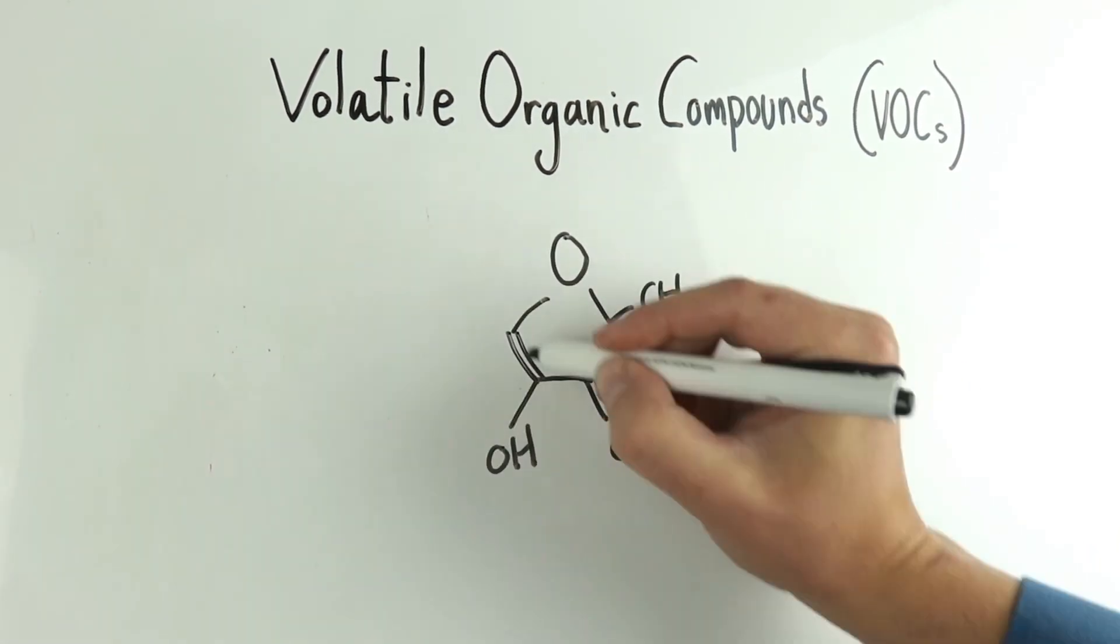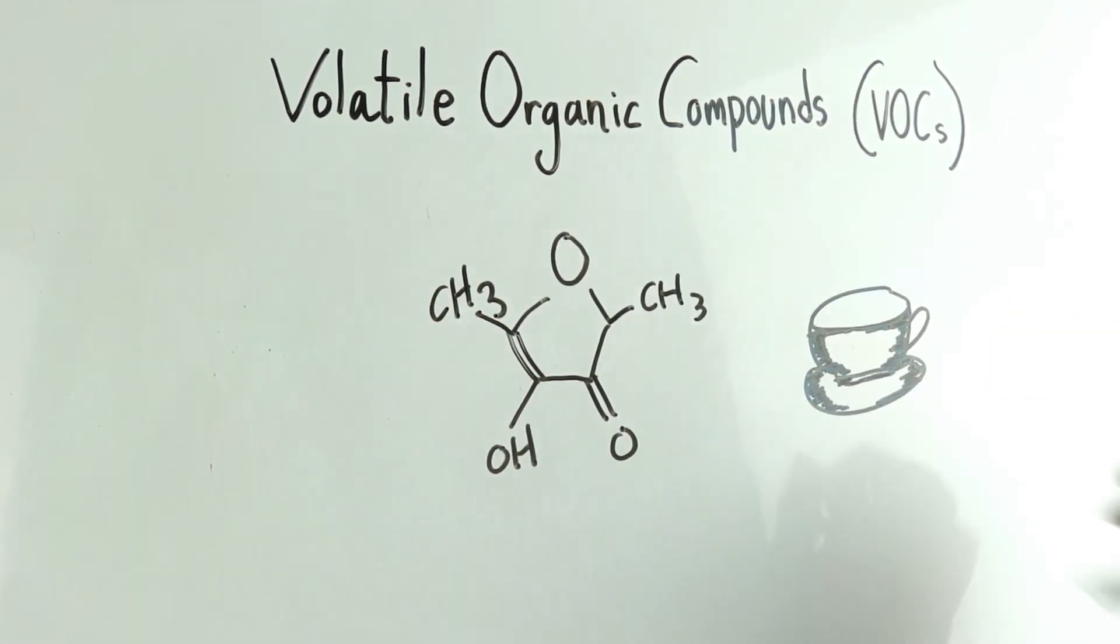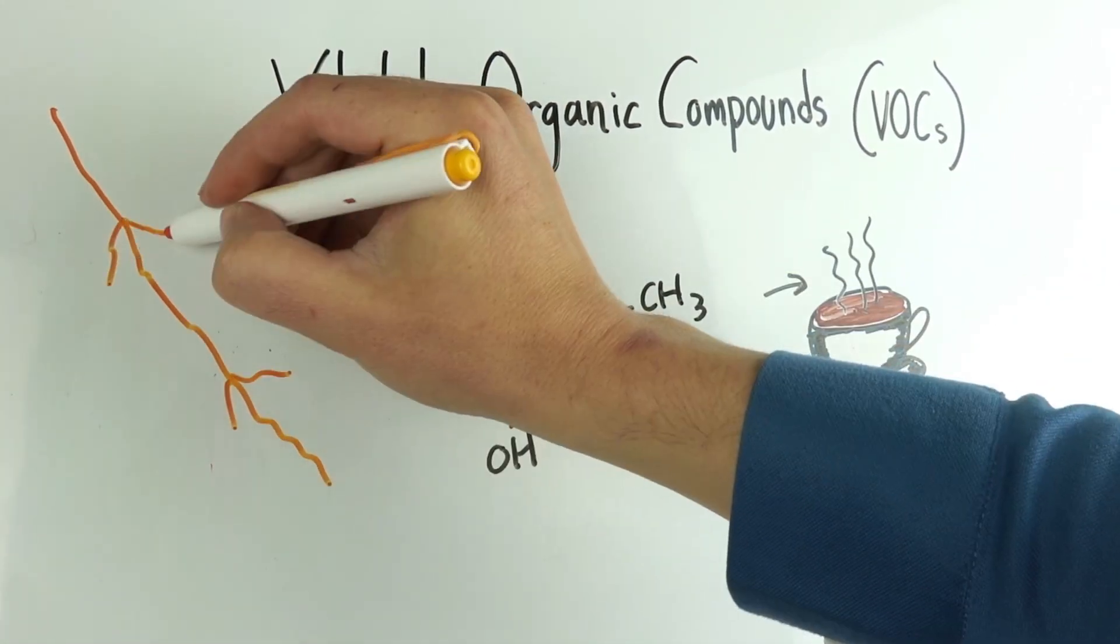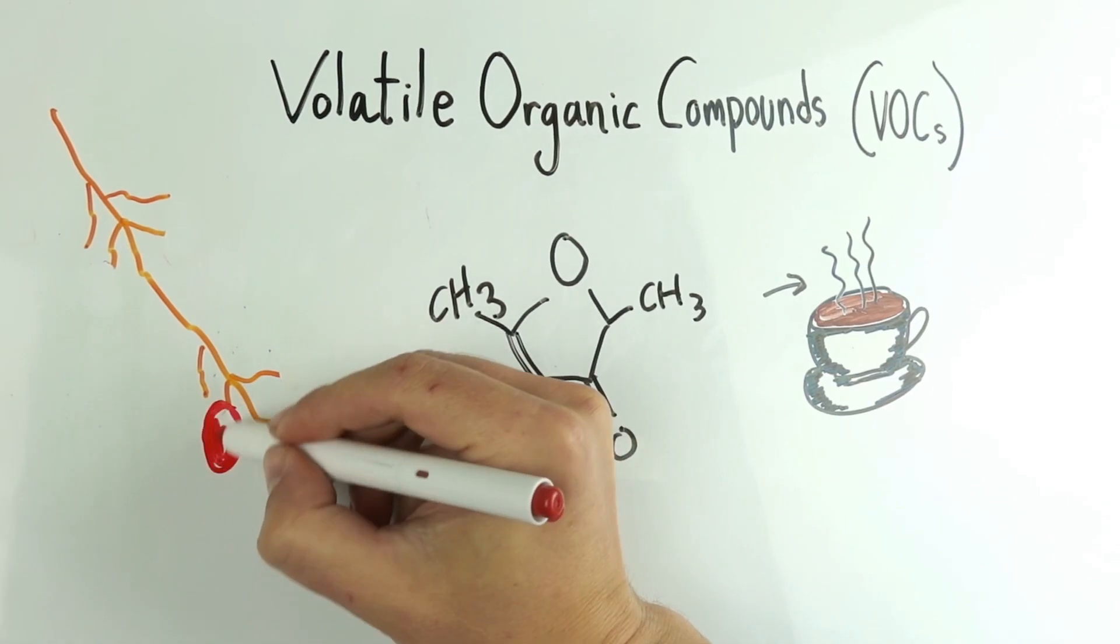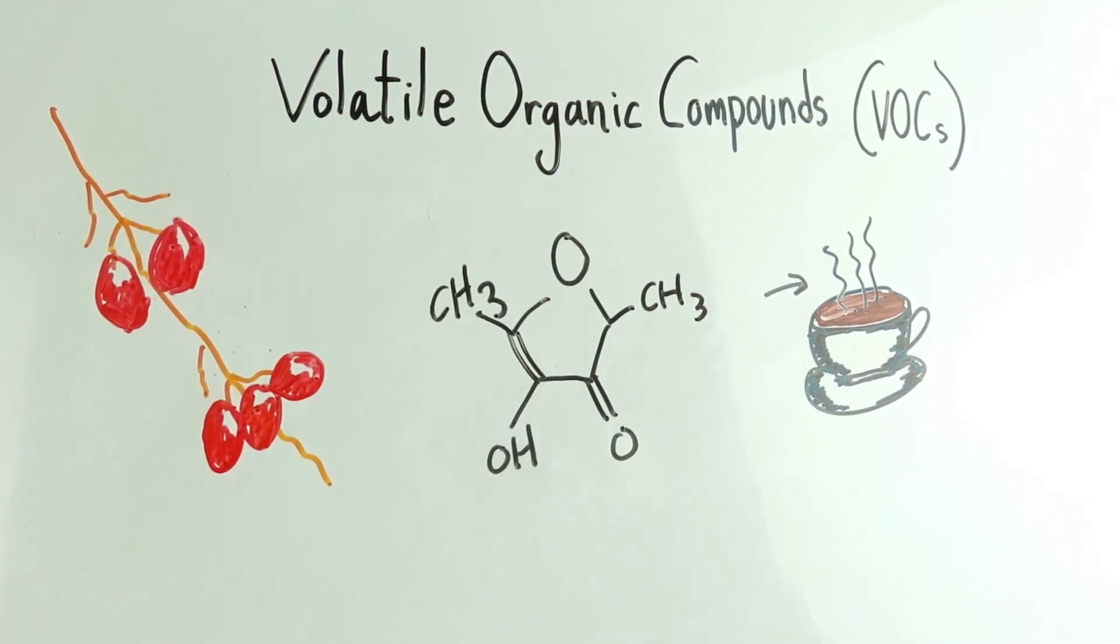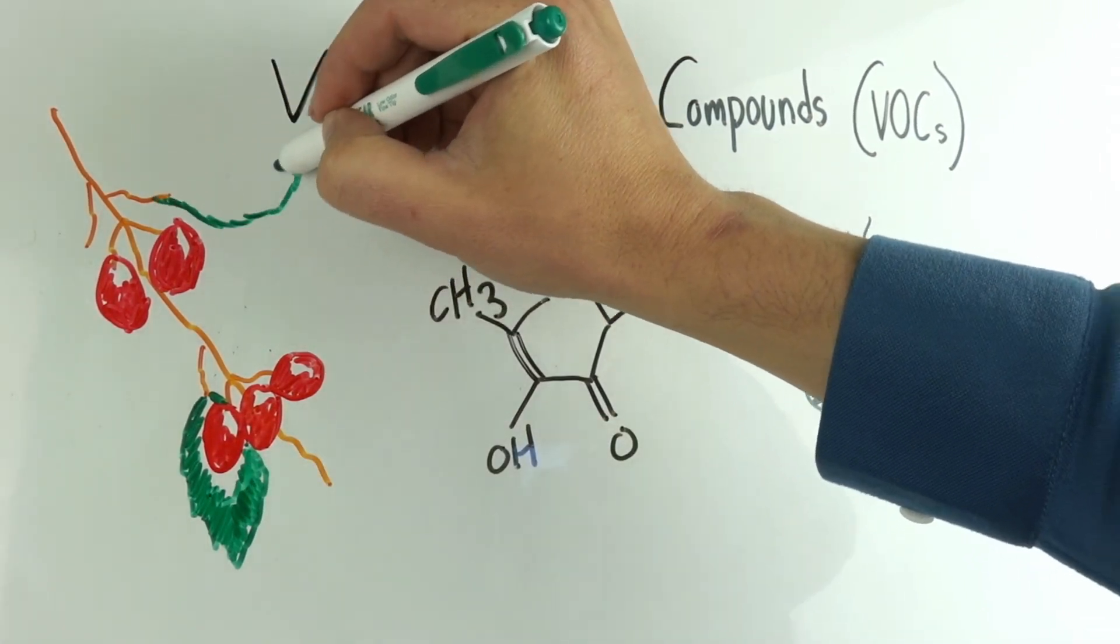As the name suggests, these compounds are volatile and easily evaporate, contributing to the aroma of brewed coffee. Additionally, they can enhance our perception of sweetness in the taste and aroma. It's important to note that many of these compounds are not part of the fruit while it is on the tree, but are formed when the fruit begins to ferment during processing.